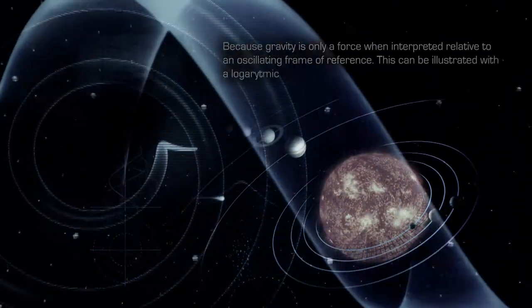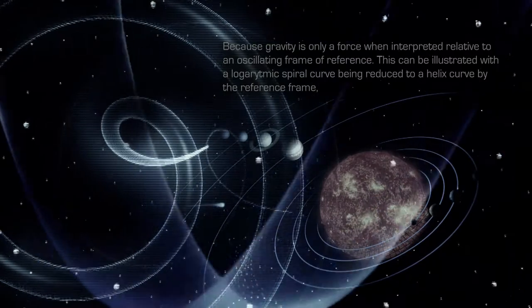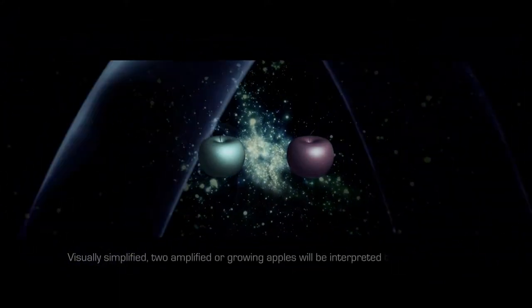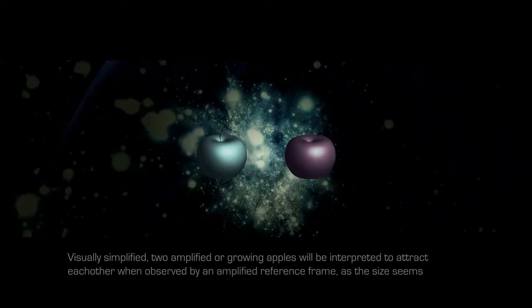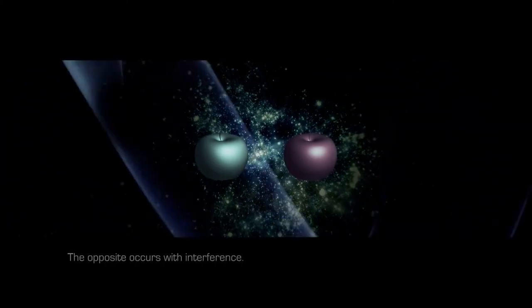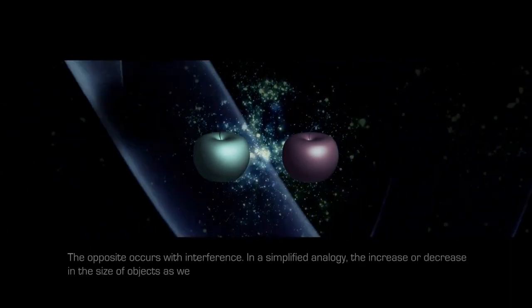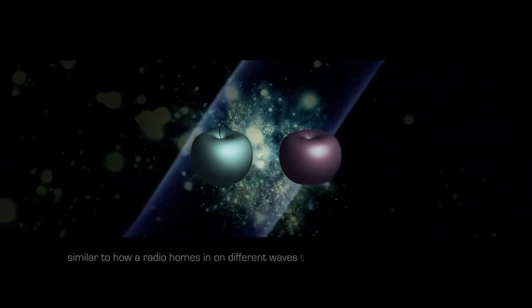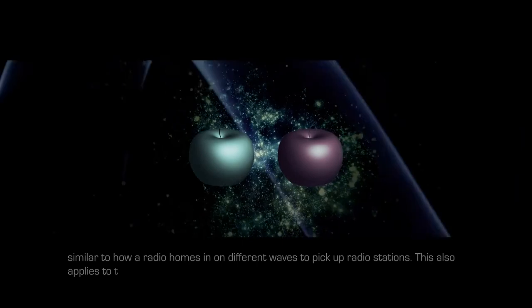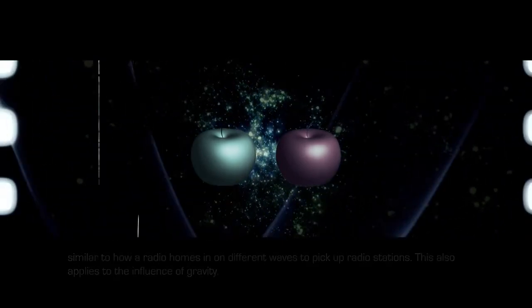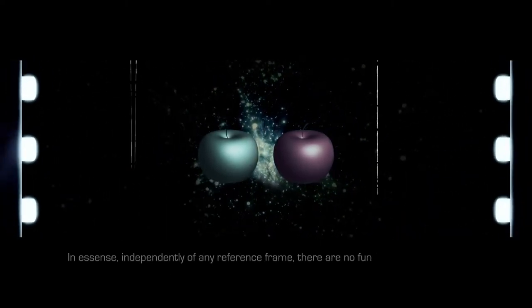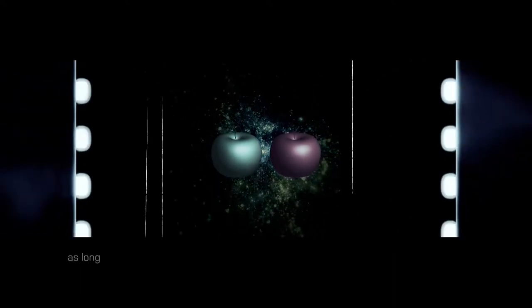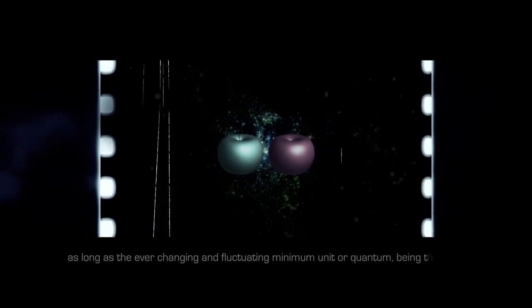Because gravity is only a force when interpreted relative to an oscillating frame of reference, this can be illustrated with a logarithmic spiral curve being reduced to a helix curve by the reference frame, making objects spin and move in orbits. Visually simplified, two amplified or growing apples will be interpreted to attract each other when observed by an amplified reference frame, as the size seems unaffected. The opposite occurs with interference. In a simplified analogy, the increase or decrease in the size of objects as we get closer or further away is determined by the shift in vectors of the reference frame, similar to how a radio hones in on different waves to pick up radio stations. This also applies to the influence of gravity. In essence, independently of any reference frame, there are no fundamental forces. All interactions within our abstract continuity can be mathematically derived through interference and resonance as long as the ever-changing and fluctuating minimum unit or quantum, being the frame of reference, is taken into account. Experimental evidence includes the unseen effect in the standard model, where we can see the force effect, but not the actual force carriers.